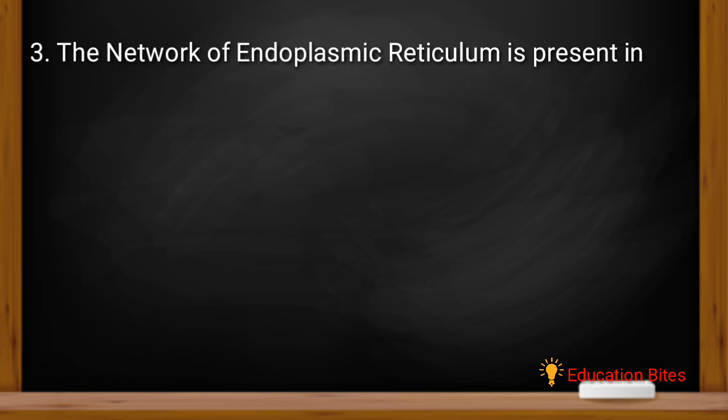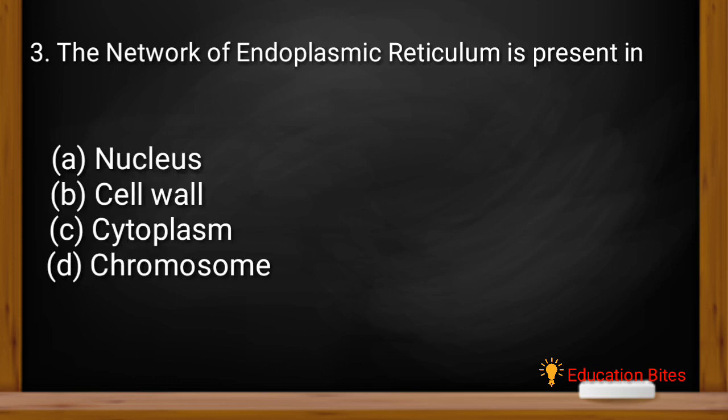So the next question is, the network of endoplasmic reticulum is present in? Endoplasmic reticulum is present in nucleus, cell wall, cytoplasm or chromosome. This answer is very easy. We know that the endoplasmic reticulum is present in a network of cytoplasm. So the answer is C, that is cytoplasm.